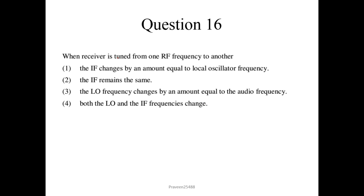Question number 16. When a receiver is tuned from one RF frequency to another, the IF remains the same — the local oscillator frequency changes. In India, the intermediate frequency for AM receivers is constant at 455 kHz. Option 2 is the correct answer.